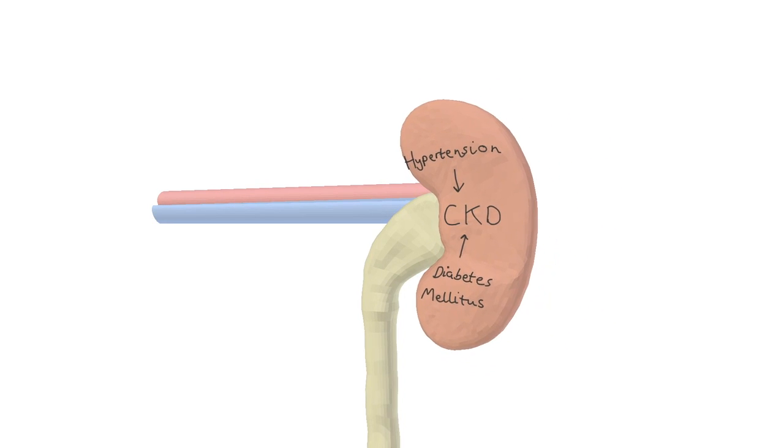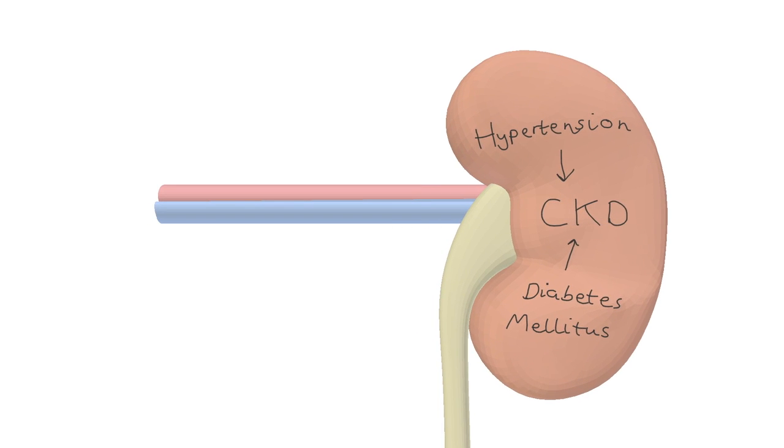CKD eventually manifests as insufficiency of all the major functions of the kidney: fluid balance, waste excretion, acid-base homeostasis, and endocrine role.